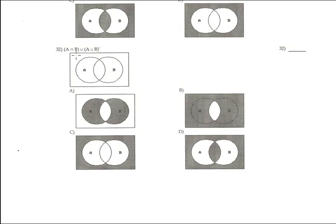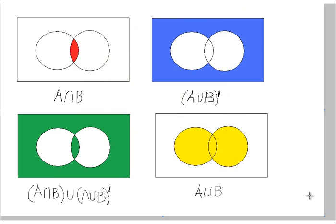Problem 32: find A∩B ∪ (A∪B)'. First, A∩B is the common part between A and B. Next, A∪B is A and B together, and its complement is the outside — the blue part. Yellow is A and B together for the union, and the complement is the blue part outside.